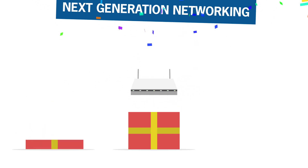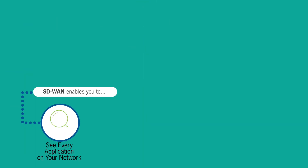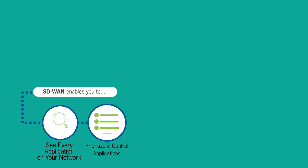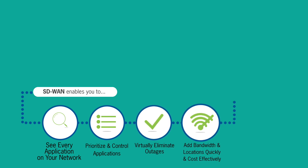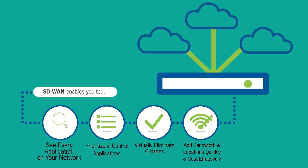As a result, SD-WAN is the next generation of network connectivity. SD-WAN enables you to see every application on your network as well as the bandwidth they're using. Prioritize and control your applications, virtually eliminate outages, and add bandwidth in additional locations quickly and cost-effectively.